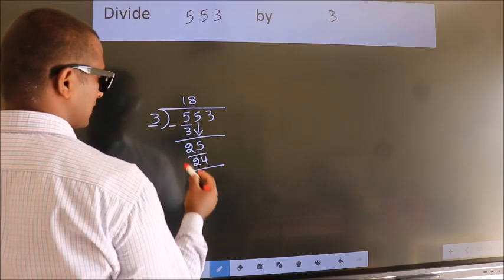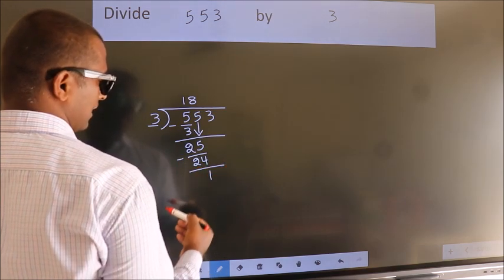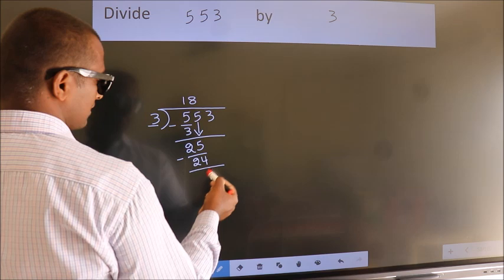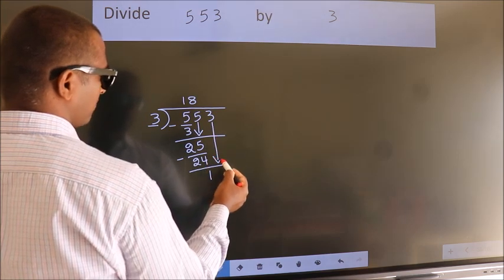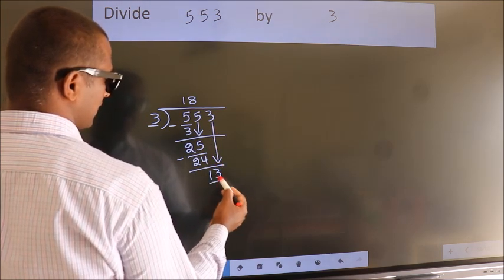Now we subtract. We get 1. After this, bring down the next number. So, 3 down. So, 13.